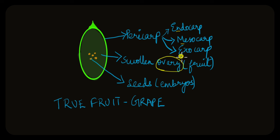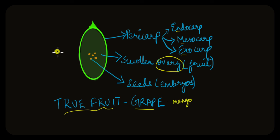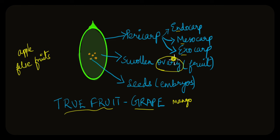If only the ovary contributes to the formation of the fruit, such fruits are called true fruits — mango and grapes are examples. During fruit and seed formation, the other parts of the flower like the thalamus begin to fall off. But in cases like apple, they don't fully fall off but actually contribute to fruit formation along with the ovary. Such fruits, in which structures other than the ovary are involved in fruit formation, are called false fruits. So, the ovules give rise to the seeds while the ovary gives rise to the fruit. Next time you eat a fruit, try to figure out if it is a true fruit or a false fruit!